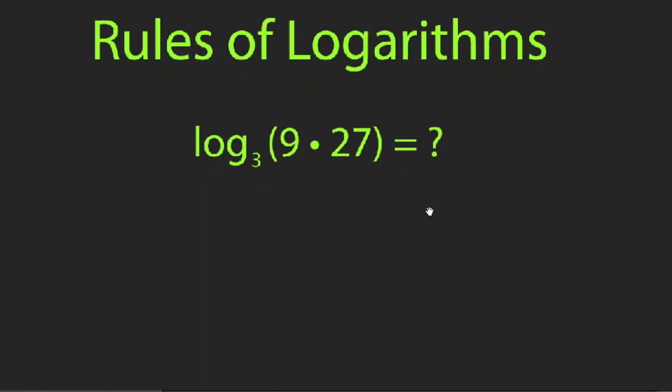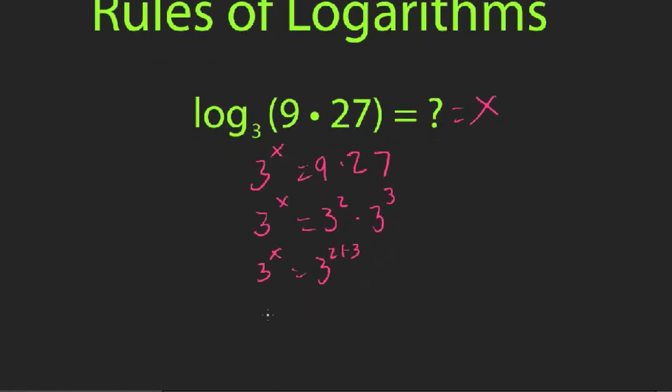Let's talk about rules of logarithms. How about if I have log base 3 of 9 times 27? Is there a way to solve this without having to multiply out 9 and 27? Well let's see if we can figure that out. I'm going to set this equal to x and then use the Heart method. 3 to the x equals 9 times 27. Now since I have 3 to a power I want the right side to also be 3 to a power. So I'm going to convert 9 and 27 to 3 squared and 3 cubed. So 3 to the x equals 3 squared times 3 cubed. Now I can combine those into 3 to the 2 plus 3. That's just a rule of exponents. And now I get that x is 2 plus 3 or x is equal to 5.